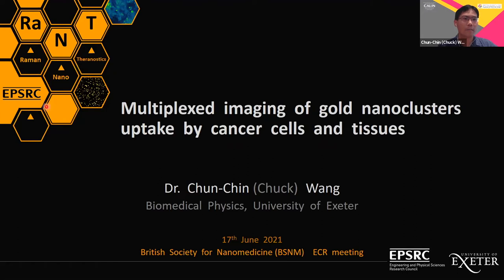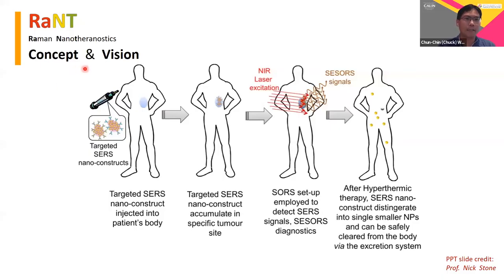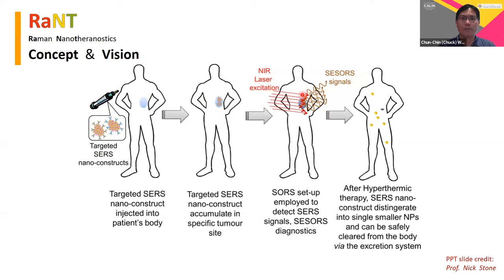Our project is funded by EPSRC. We use a Raman-based technique to do therapy and diagnosis with the help of gold nanoclusters. This slide shows the concept and vision of our project. We will inject functionalized gold nanoclusters into the human body, and after a few minutes these will accumulate at a specific tumor site. We then shine a near-infrared laser to generate surface-enhanced Raman signal and also do photothermal therapy. After killing the cancer cells, these functionalized gold nanoclusters separate back into individual gold nanoclusters, which can be safely cleared from the human body.